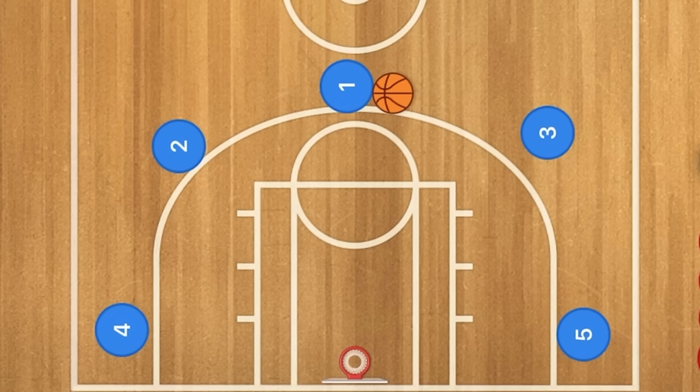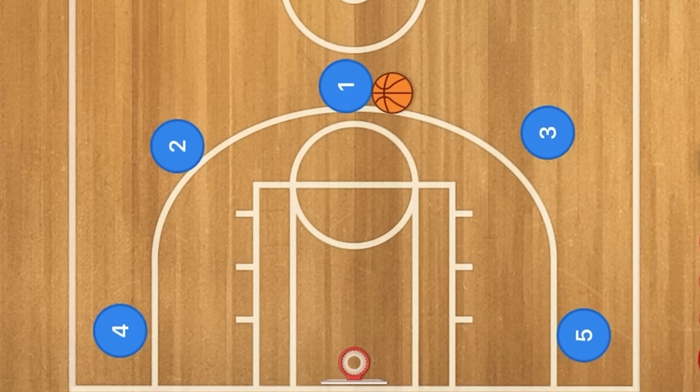My number 5, counting down from 5 to 1 — my top 5 basketball play number 5 is the 5-out, pass, and screen away. I'm also going to lump this into pass and screen for the player you're passing to.